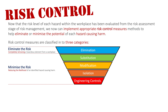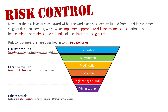We now move into the final category, which is that of other controls. This involves implementing safety procedures for individuals to protect themselves from the hazards associated with procedures and equipment. There are three levels here, with the first being administration. That might include safety signage notifying people of the risks associated with hazards within an environment, or having markings on the floor indicating where people are to stand when using equipment and where others should stay clear to avoid interrupting the person using that equipment.